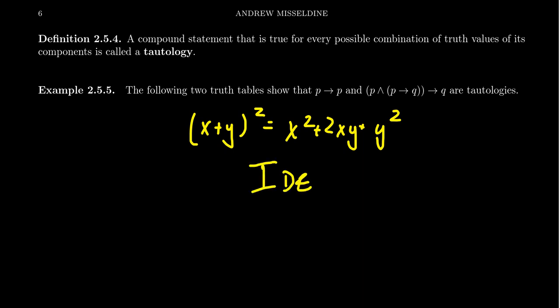In algebra, this is often what we refer to as an identity: an equation for which any assignment of the variables is satisfied. This follows, of course, from the distributive laws—the typical FOIL method is what justifies this.